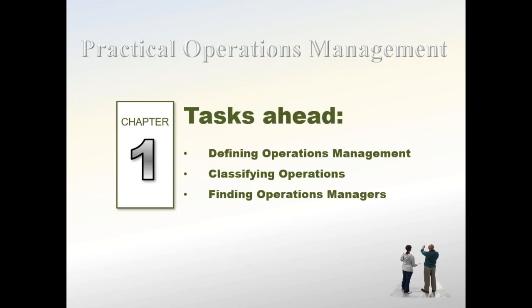In this chapter, we will define operations management, we will classify operations, and we will discuss roles of operations managers in regard to decision making and operations within an organization. Look for operations management as the creation of value, making it the heart of any organization, the balance of productivity, sustainability, and responsibility in successful operations, and types of decision making, product, degree of uncertainty and control, and the operations within an organization as well as supporting professional and academic societies.